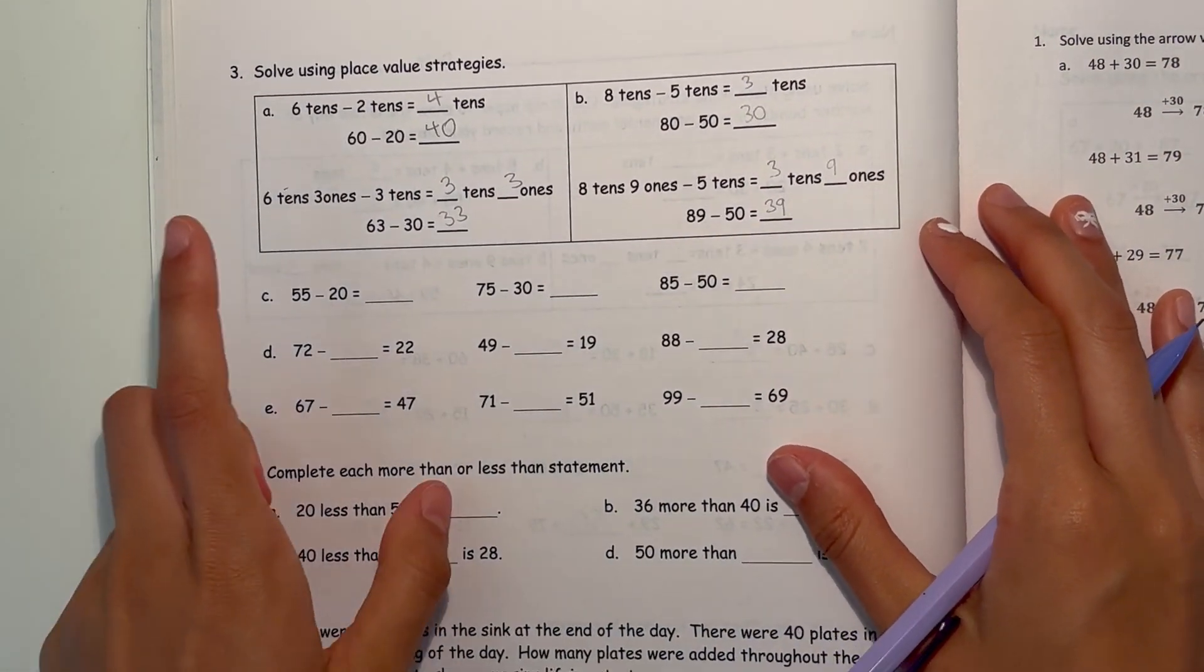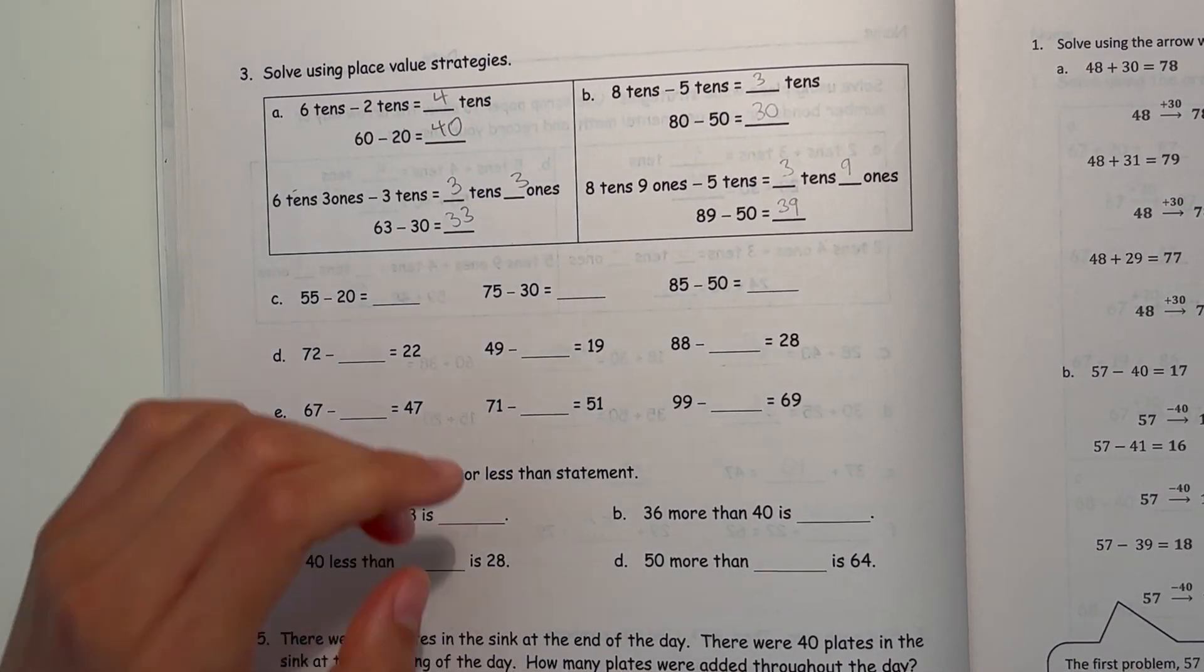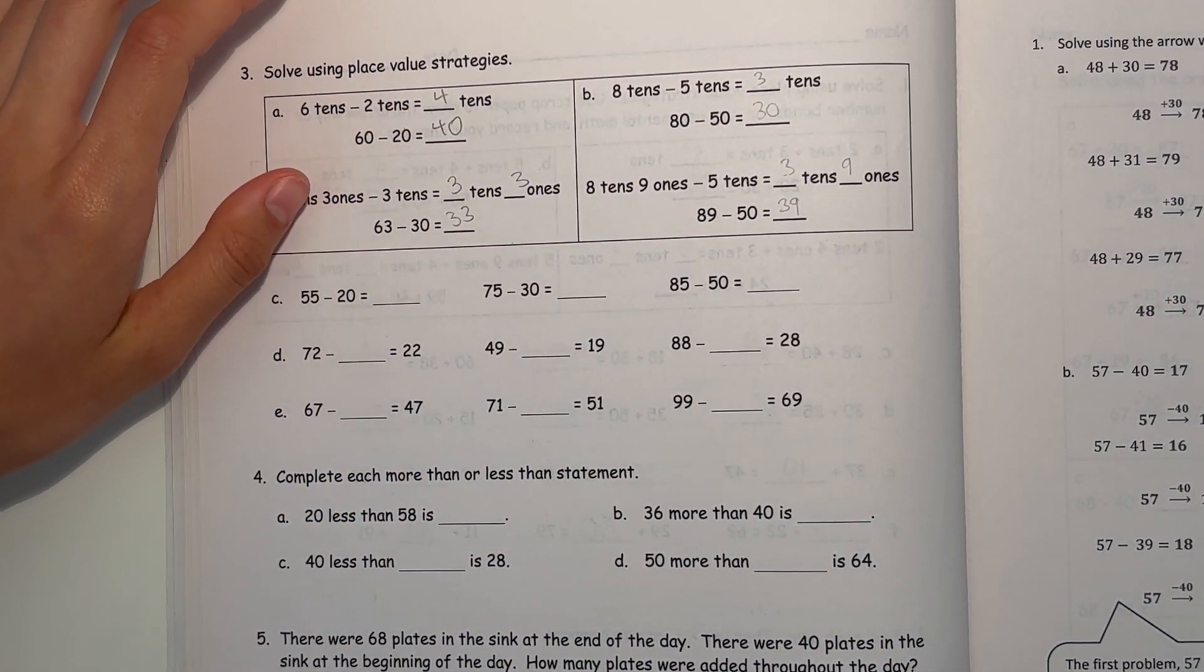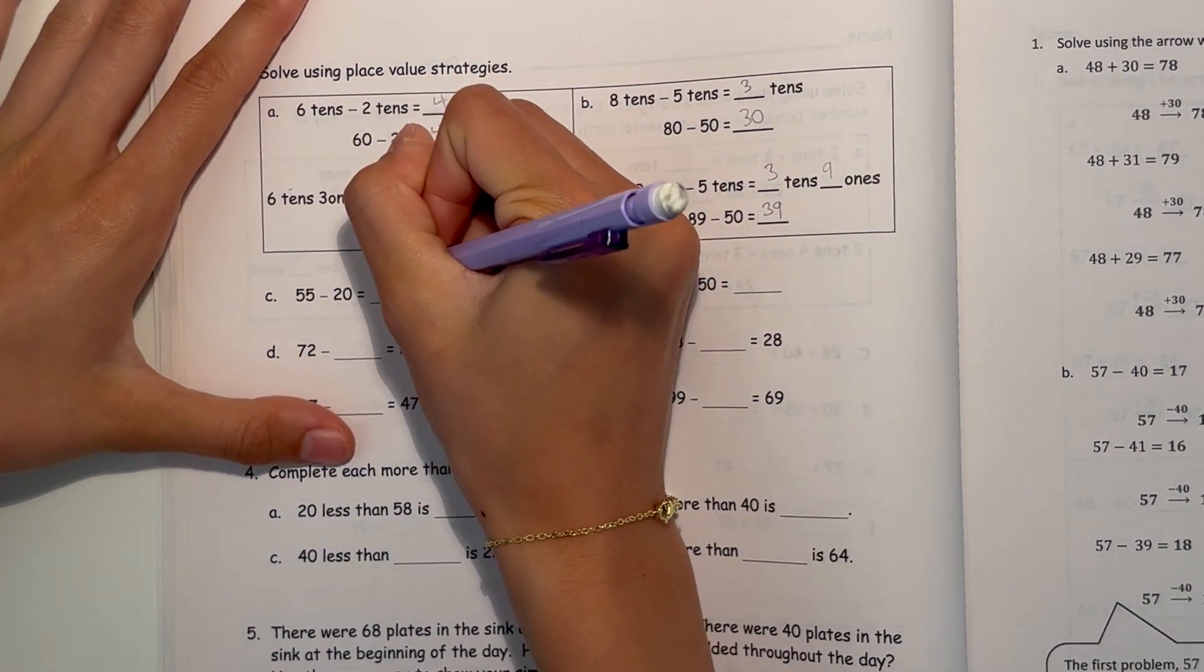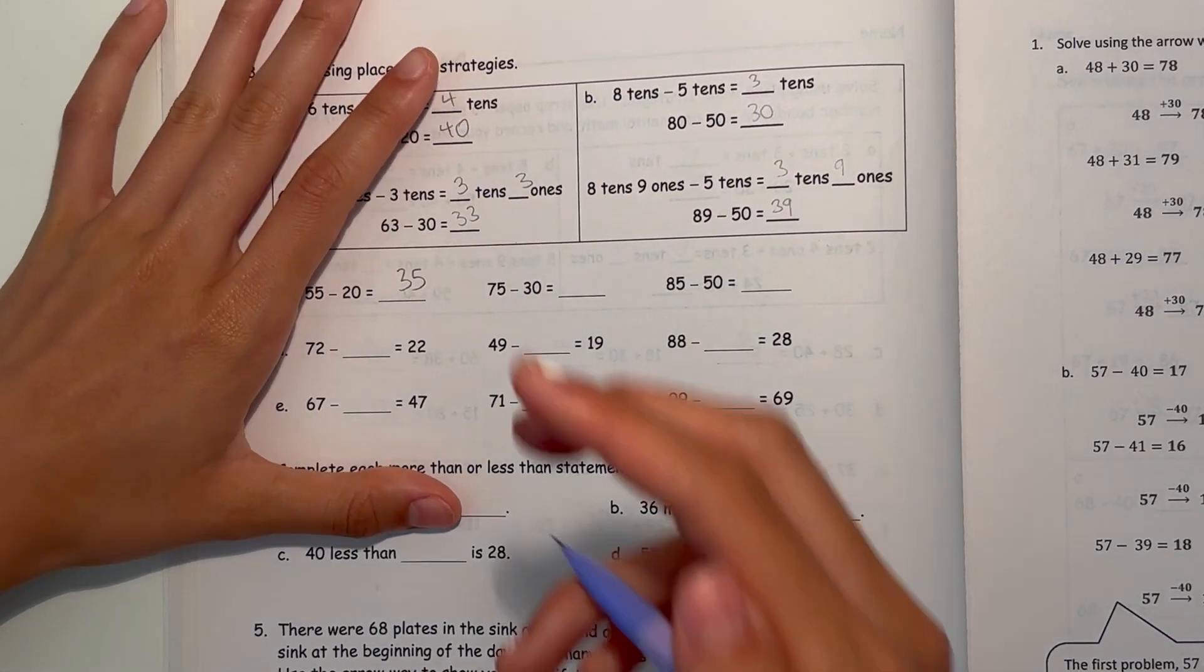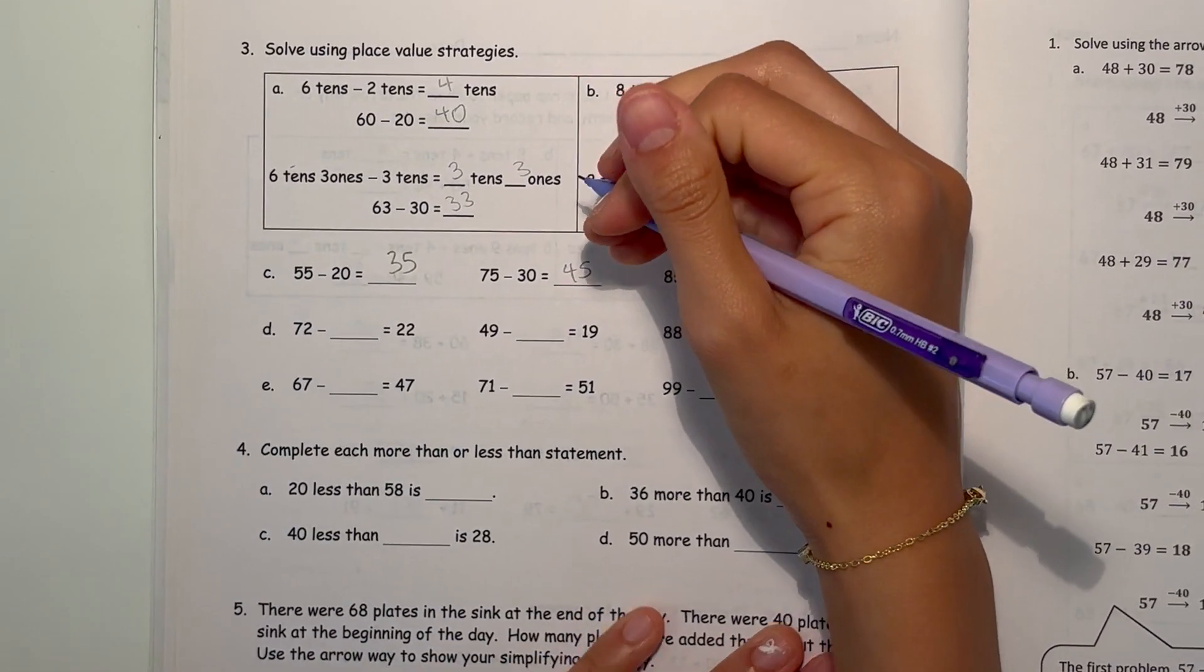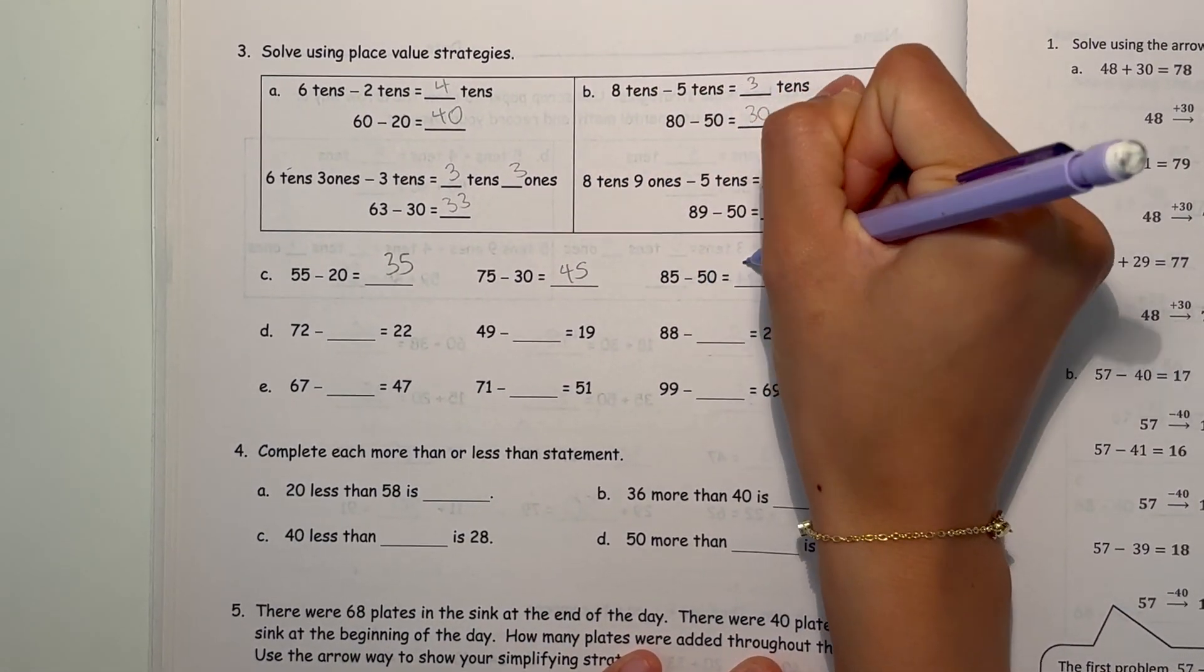Alright, now C, 55 minus 20, just subtract 2 tens, so that's 35. 75 minus 30, subtract 3 tens, so that's 45. 85 minus 50 is 35.